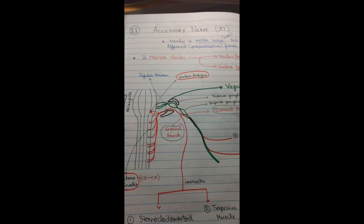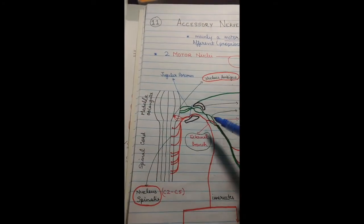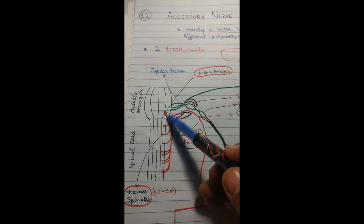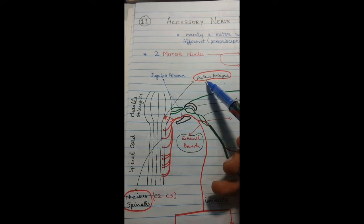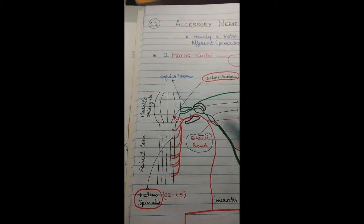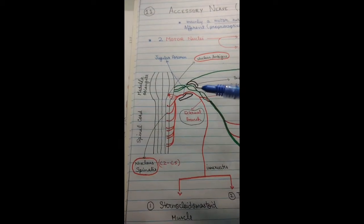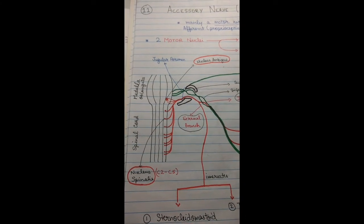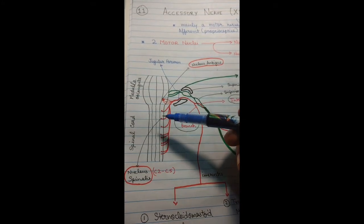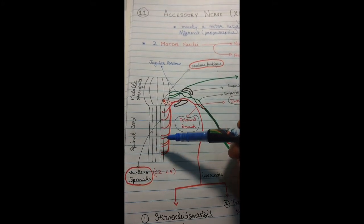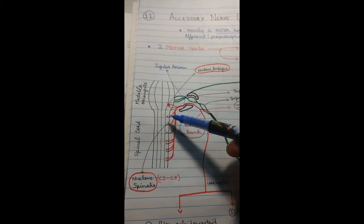Starting from the two motor nuclei: in the medulla oblongata, the first nucleus is nucleus ambiguus, as you can see here. The second nucleus is nucleus spinalis, also called the spinal nucleus, present in the spinal cord as you can see clearly. They receive roots from C1 to C6 mainly.